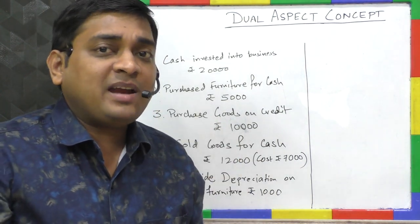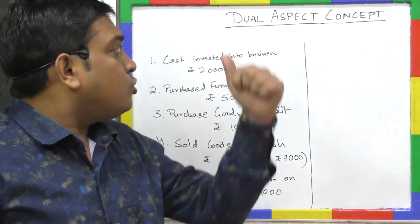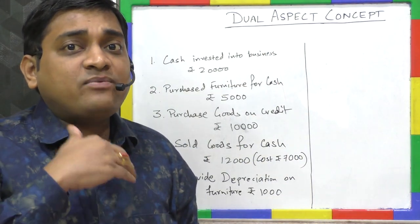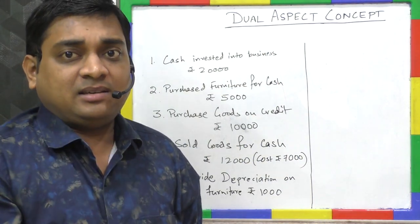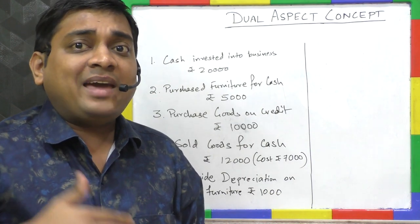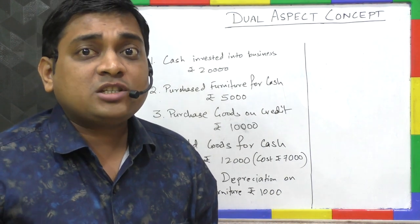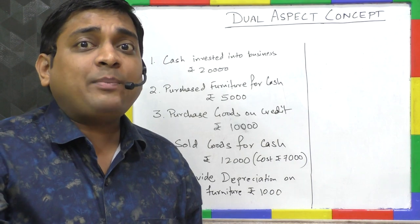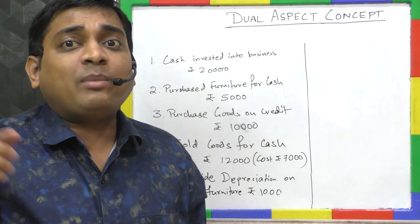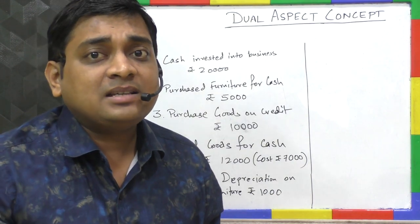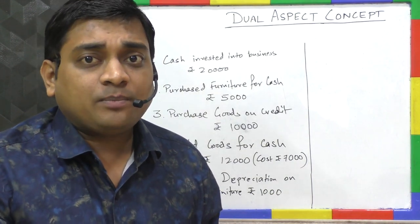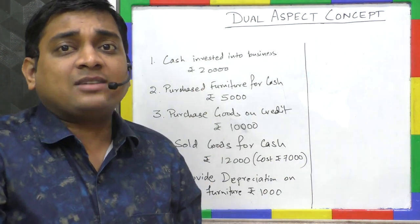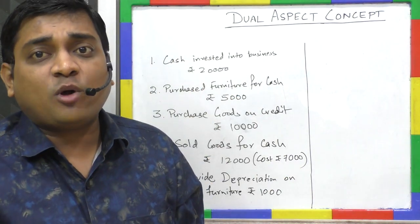Dual aspect concept says that for every debit there is a corresponding credit, and from here the concept of double entry system of accounting has developed.